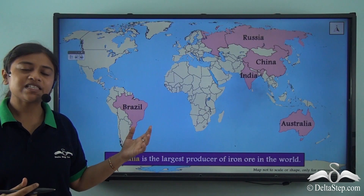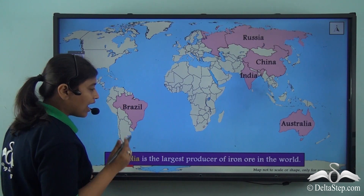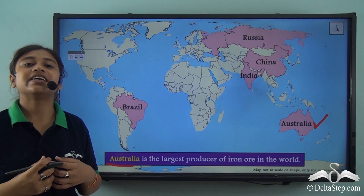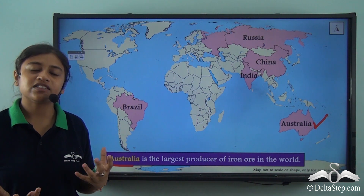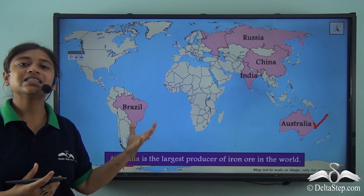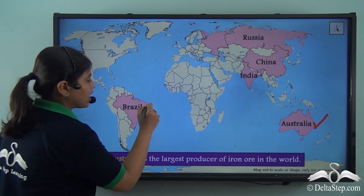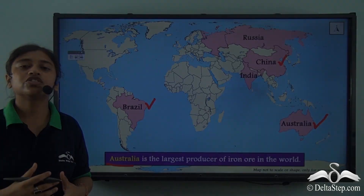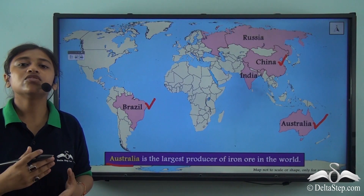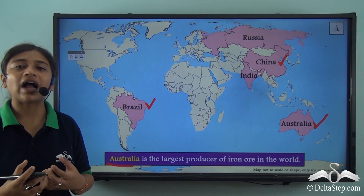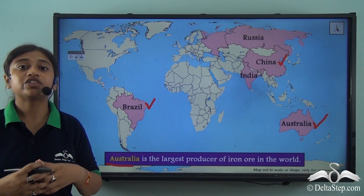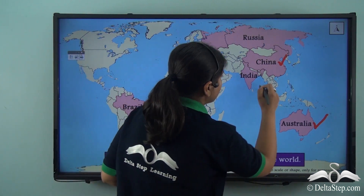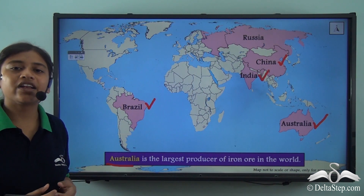If we take a look at the world map, Australia is the largest producer of iron ore in the world, responsible for 37.6% of the total iron ore production of the world. Other leading producers are Brazil, which is the second largest producer, followed by China, which is the top producer of iron ore in Asia. India is the fourth largest producer of iron ore in the world.